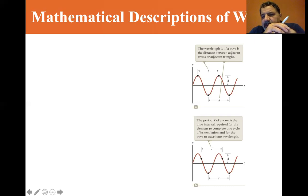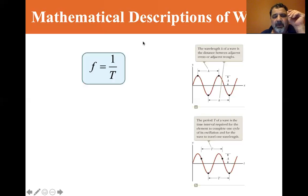Now the period T of a wave is the time interval required for the element to complete one cycle of its oscillation and for the wave to travel one wavelength. So that's the period. And we're going to learn that one over the period is frequency. So frequency is equal to one over the period. It's the inverse of the period.